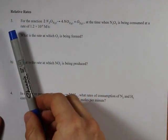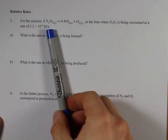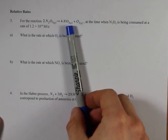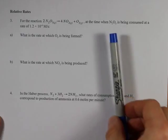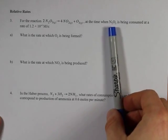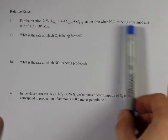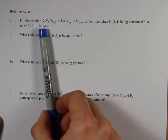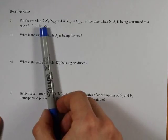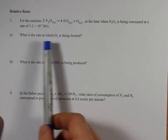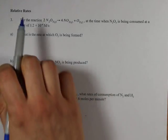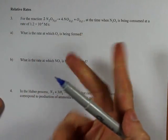Let's do a related rates question. For the reaction 2 N2O5 → 4 NO2 + O2, at some point N2O5 is being used up at a rate of 1.2 × 10^-4 moles per liter per second—that's what the capital M stands for. At what rate is O2 being formed? Related rates are actually pretty straightforward.